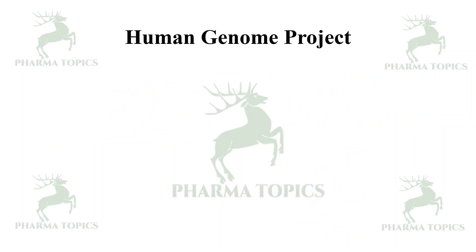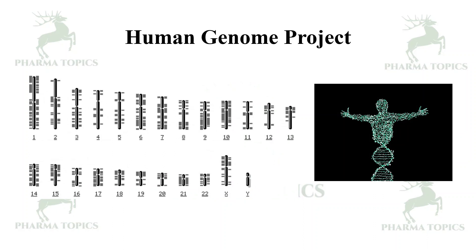These are some examples of the success of genome projects in target discovery and validation. The Human Genome Project revealed that there are 23 chromosomes — 22 autosomes and the X and Y sex chromosomes.